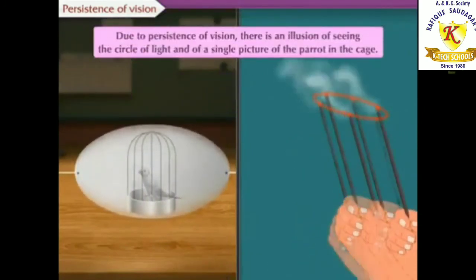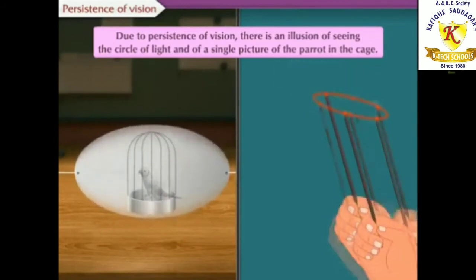Due to the persistence of vision, there is an illusion of seeing the circle of light and of a single picture of the parrot in the cage.